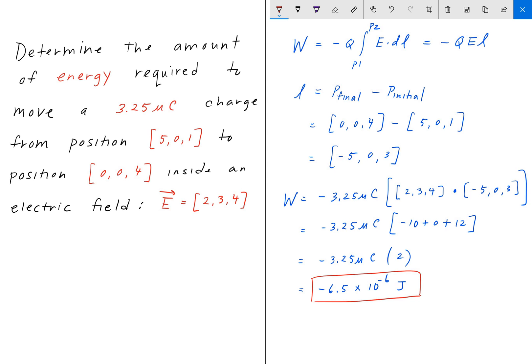So, that tells us that in order to move this point charge, which has a charge of 3.25 microcoulombs, from position A (5,0,1) to position B (0,0,4), inside this electric field (2,3,4), it's going to require negative 6.5 times 10 to the negative 6 joules, or negative 6.5 microjoules.